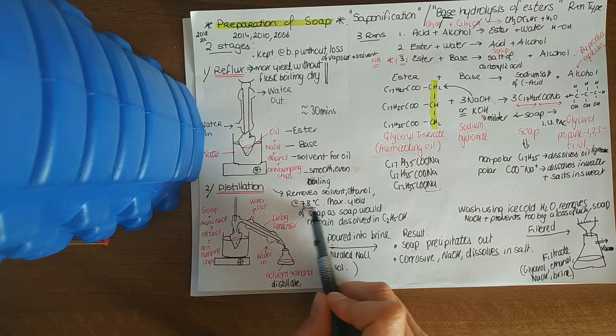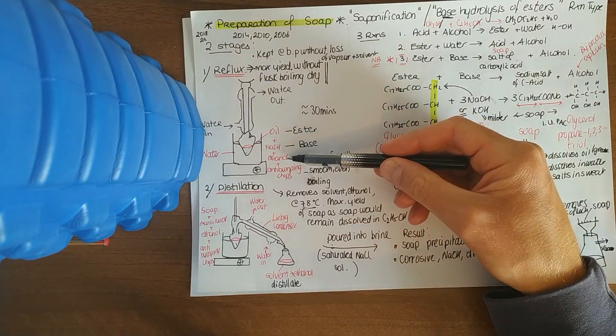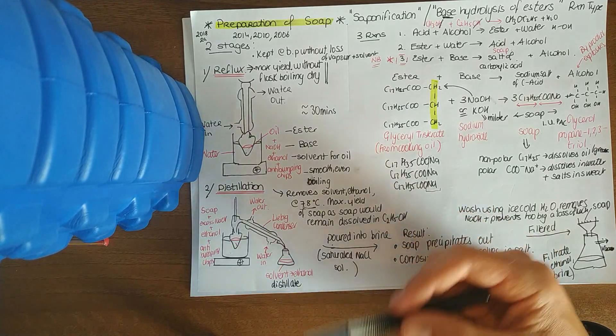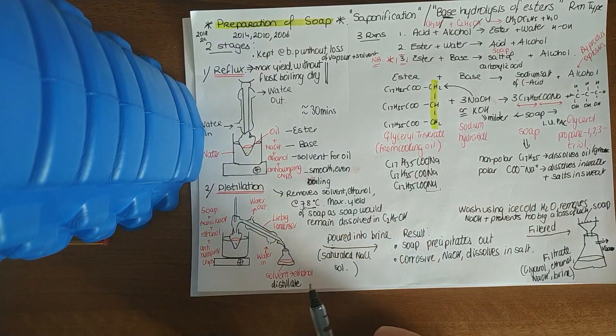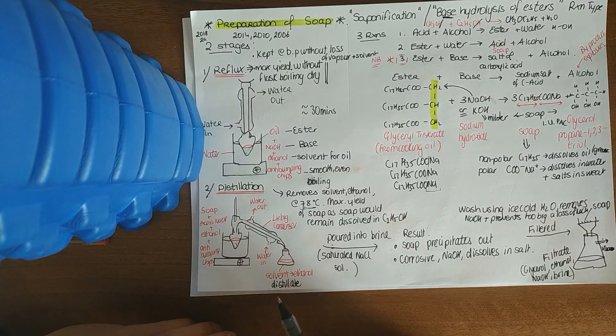After distillation, whatever's collected is known as your distillate. This will stay at 78 degrees Celsius, the boiling point of ethanol, until all your ethanol is removed. So if you put in 10 cm³ at the start of ethanol, you should get 10 cm³ at the end. Then you can turn off your hot plate.